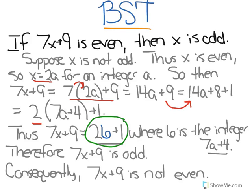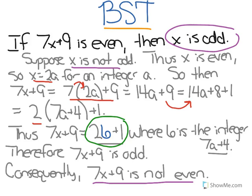7x plus 9 is not even. So we started with x is not odd, which is not Q, and we ended up with 7x plus 9 is not even, which is not P. So we just proved this if-then statement using the contrapositive proof method.